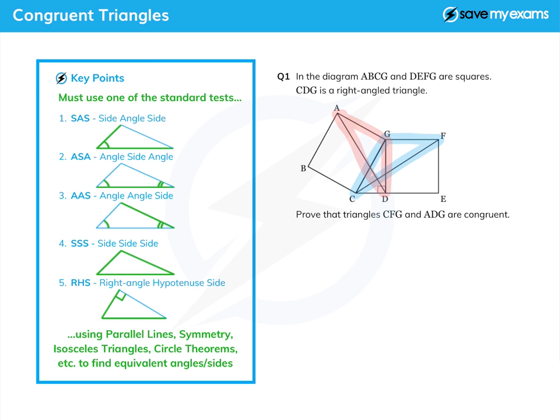Now, the thing to do here is to look for obvious things that are the same. And you can see, because I've highlighted them in different colors, quite quickly that GD is equal to GF. And why is that the case? That's because they are two sides of a square. So we've already got one side the same: GD is the same as GF.